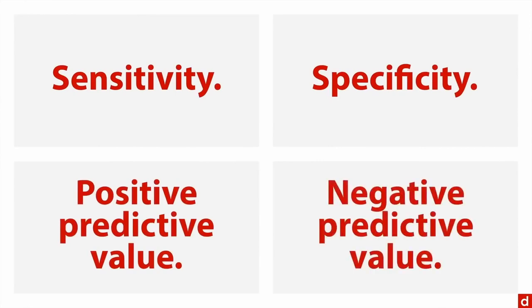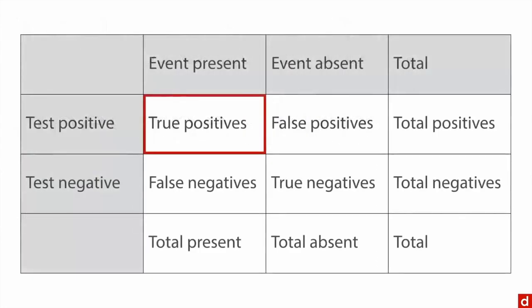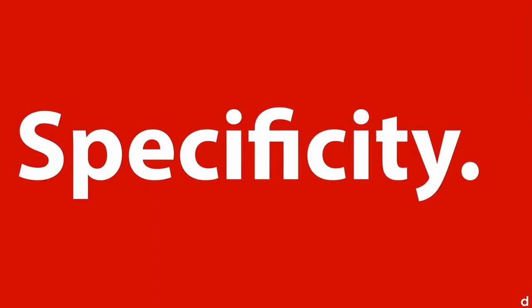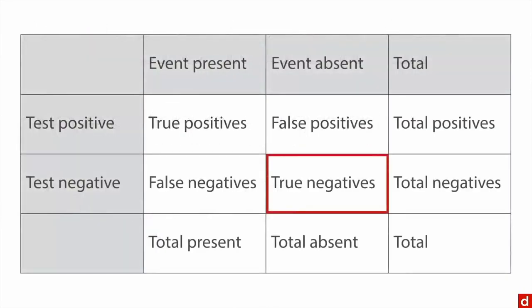Sensitivity can be expressed this way: if there's a fire, does the alarm ring? You look at the true positives divided by the total number of alarms — you want an alarm every time there's a fire. Specificity is the flip side: if there isn't a fire, does the alarm stay quiet? You're looking at the ratio of true negatives to total absent events — when there's no fire, the alarms aren't ringing.